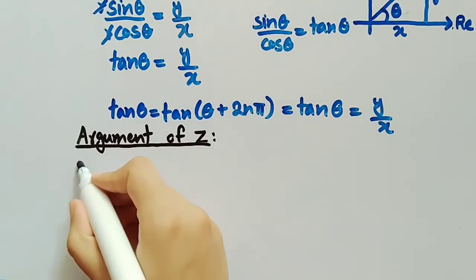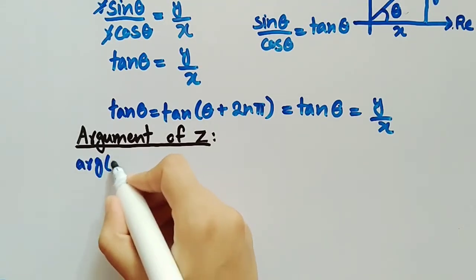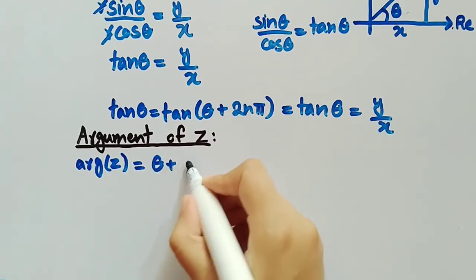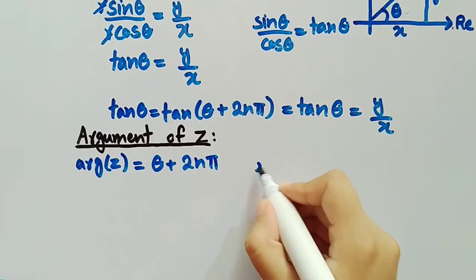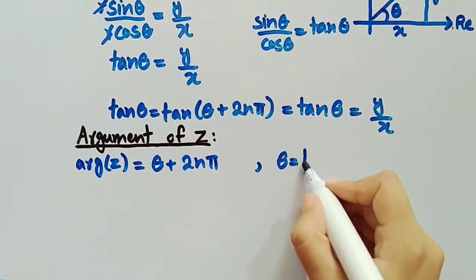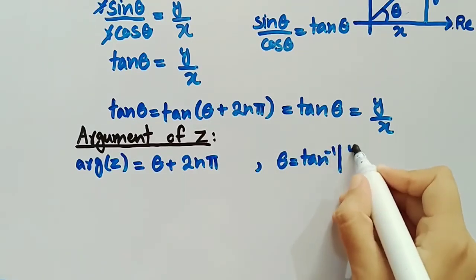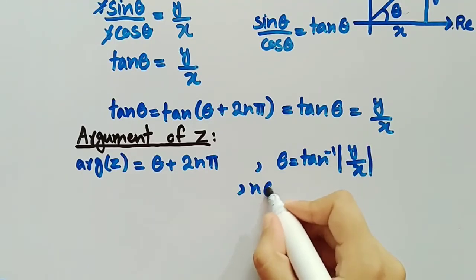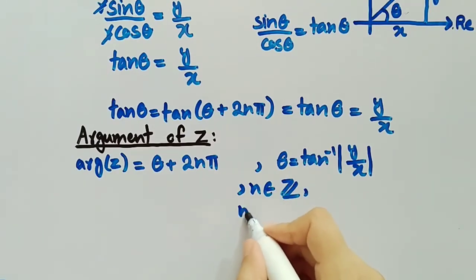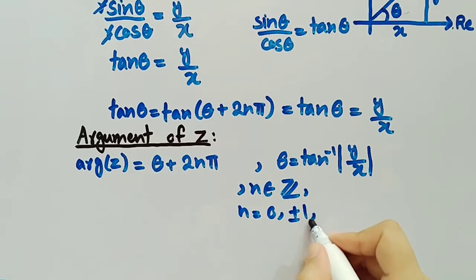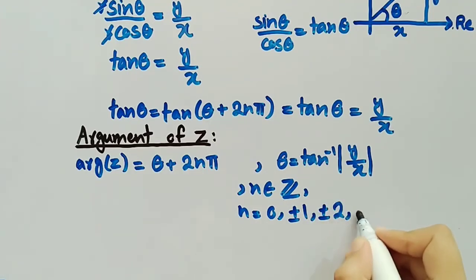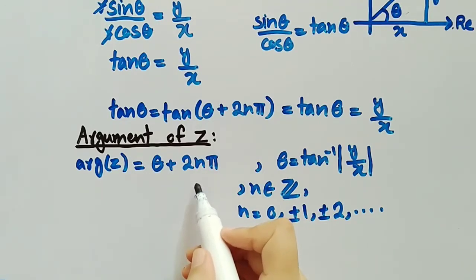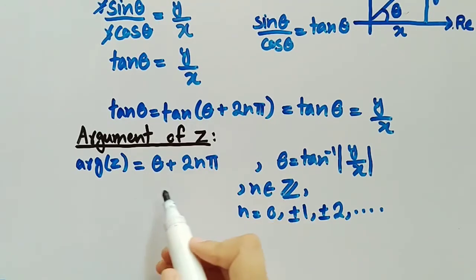The argument of z is represented by arg(z), which is equal to θ + 2nπ, where θ equals tan inverse of y by x, and n belongs to the set of integers, meaning n equals 0, ±1, ±2, and so on. When we vary the value of n in this equation we get infinitely many values of the argument of z.